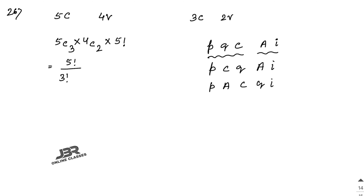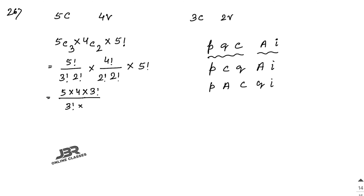Calculating: 5C3 = 5!/(3! × 2!) = (5 × 4)/2 = 10. And 4C2 = 4!/(2! × 2!) = (4 × 3)/2 = 6. Wait — 2! cancels out, leaving 5 × 4 = 20 and then × 3 giving results. Simplifying step by step: 5 × 4 = 20, and from 4C2 we get 6, so 20 × 6 = 120.